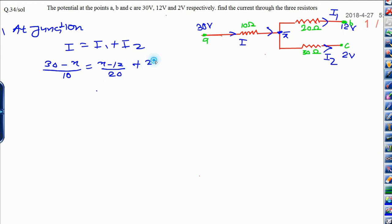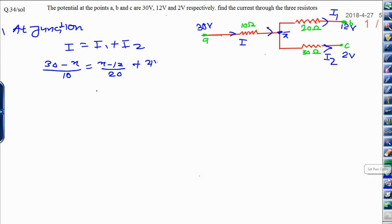Plus I2, that is X minus 2 upon resistance 30.